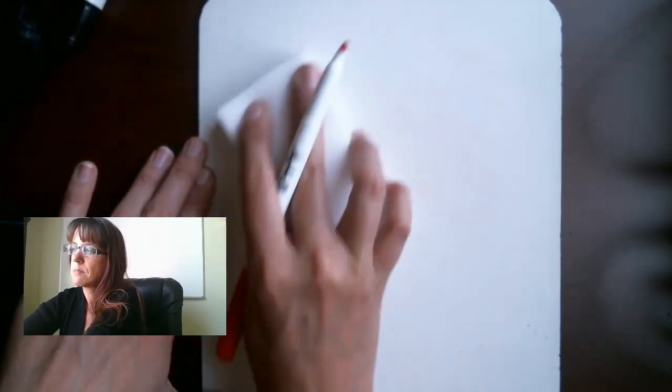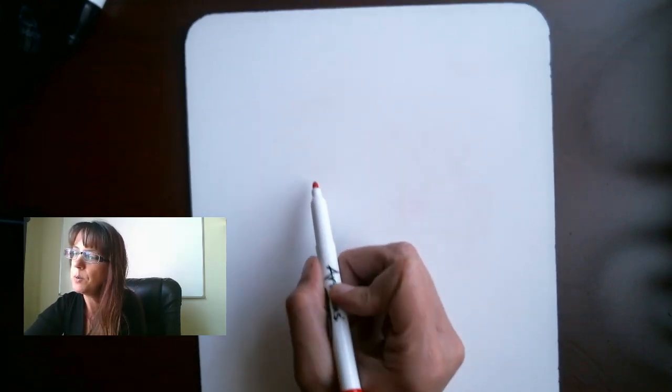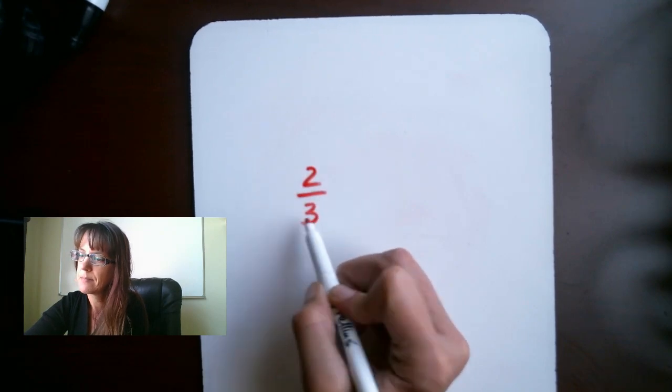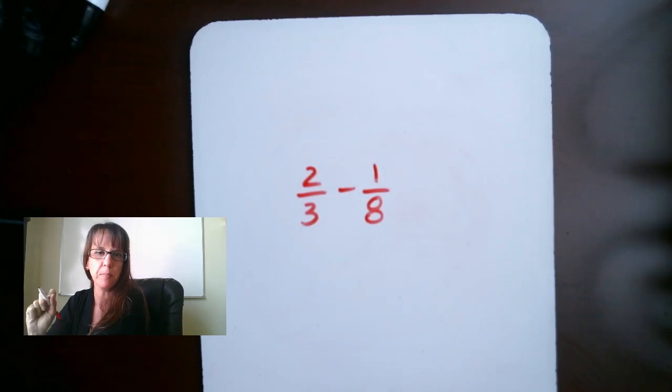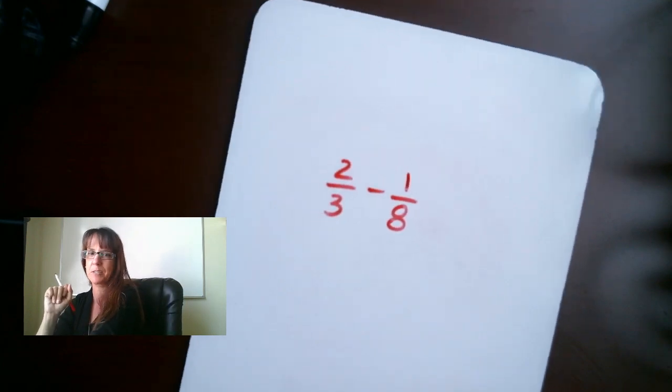All right, so as we go along in these videos, what I want you to do is to make sure that you're writing down the examples that I'm showing you. And also, every once in a while, I'm going to have you pause the video and do a practice problem. And so here's one such practice problem. Let's do 2 over 3 minus 1 over 8. At this point, go ahead and pause the video and see if you can't work this out. When you're done, come on back to us.